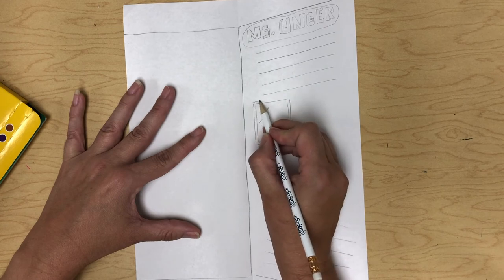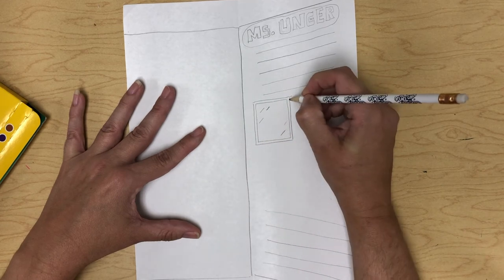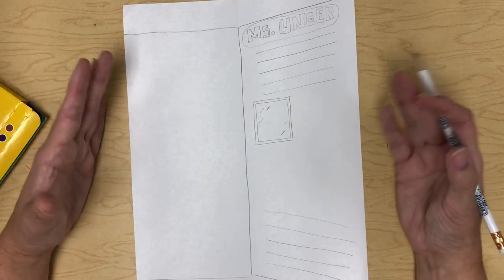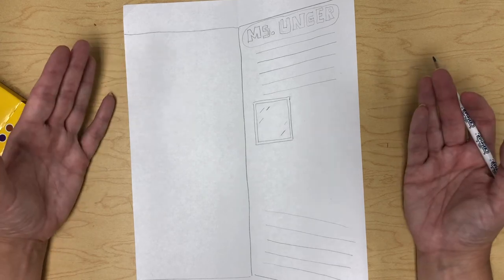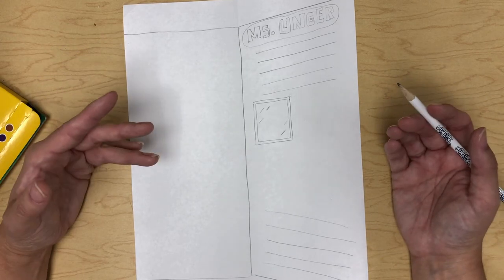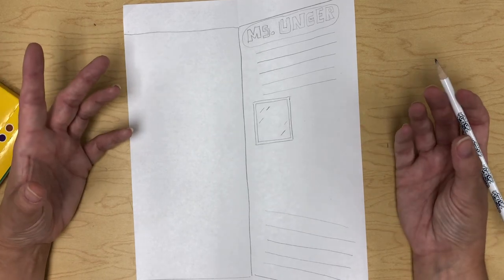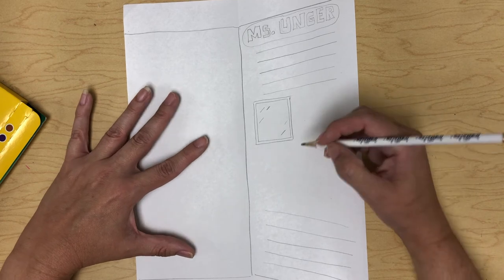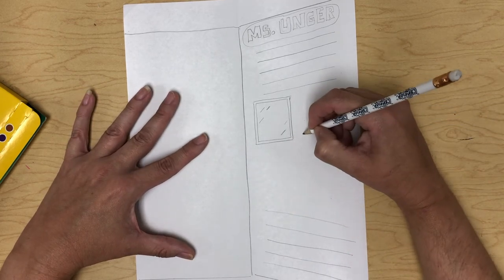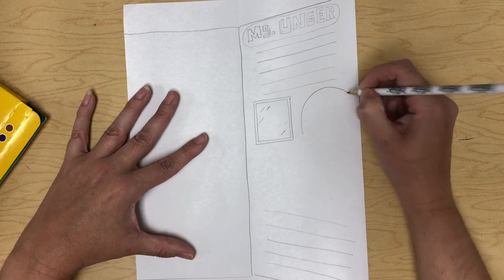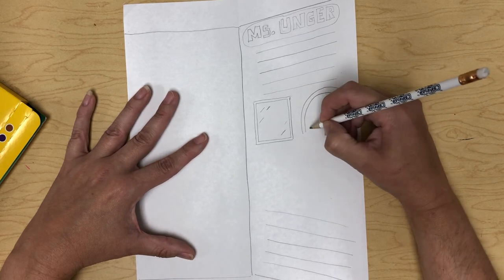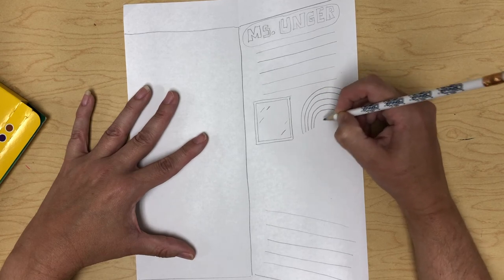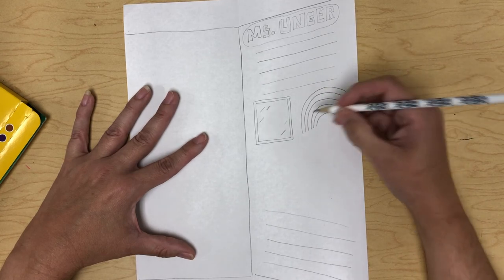And then you're going to think of some things that represent you. Some symbols that represent who you are. Now I love art and I can think of quite a few symbols that would relate to art. I might want to make something like maybe a rainbow because I like to use a lot of color in my artwork. So I can think about a sticker that would kind of look like a rainbow and I could draw that on this side.